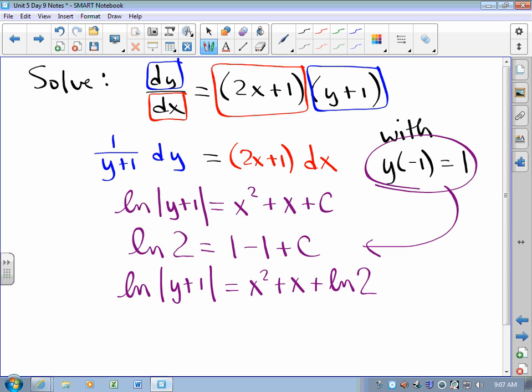Now, most of the work is done by now. If this were a 6-point question on an AP free response, you'd have 1 for the separation, 2 for the anti-derivatives, 1 extra for a +C, 1 for using the initial condition, and then this last point is just getting y by itself. How do I get y by itself? I'm going to exponentiate both sides.